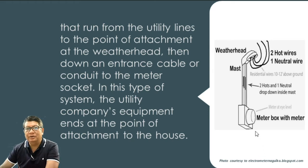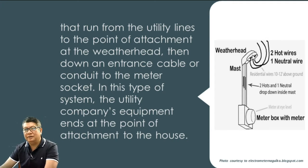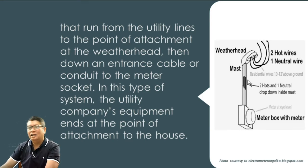Our grounding system does not use the neutral conductor. The two hot conductors refer to line-to-line voltage or line-to-line distribution, and the neutral is used as our grounding system. The service entrance runs from utility lines to the point of attachment at the weather head — commonly called the entrance cup in layman's terms, because it looks like a cup or kalo. The conductors or wires come from the pole, then we have what is called a mast — just simply a tube or pipe.